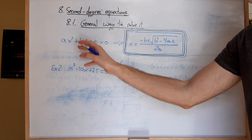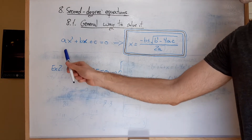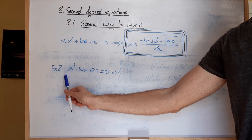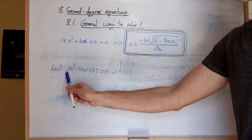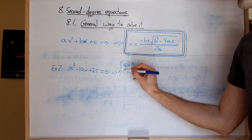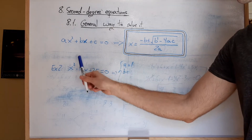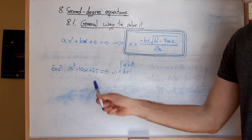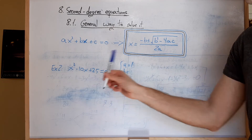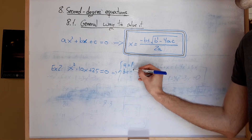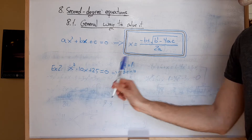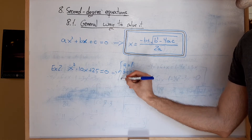In this case, comparing both equations, we know that a, as there is no coefficient, must be 1. B, as its coefficient in case of x is minus 10, would be minus 10. And c equals 25.